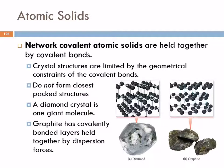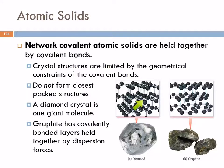Essentially, a diamond is one giant molecule. These atoms cannot take on closest-pack structures because they are limited by the geometry of the covalent bonds. Carbon can form four covalent bonds, which takes on a tetrahedral structure, causing the structure to be more open than metal atoms or ions that can take on a closer-packed structure.